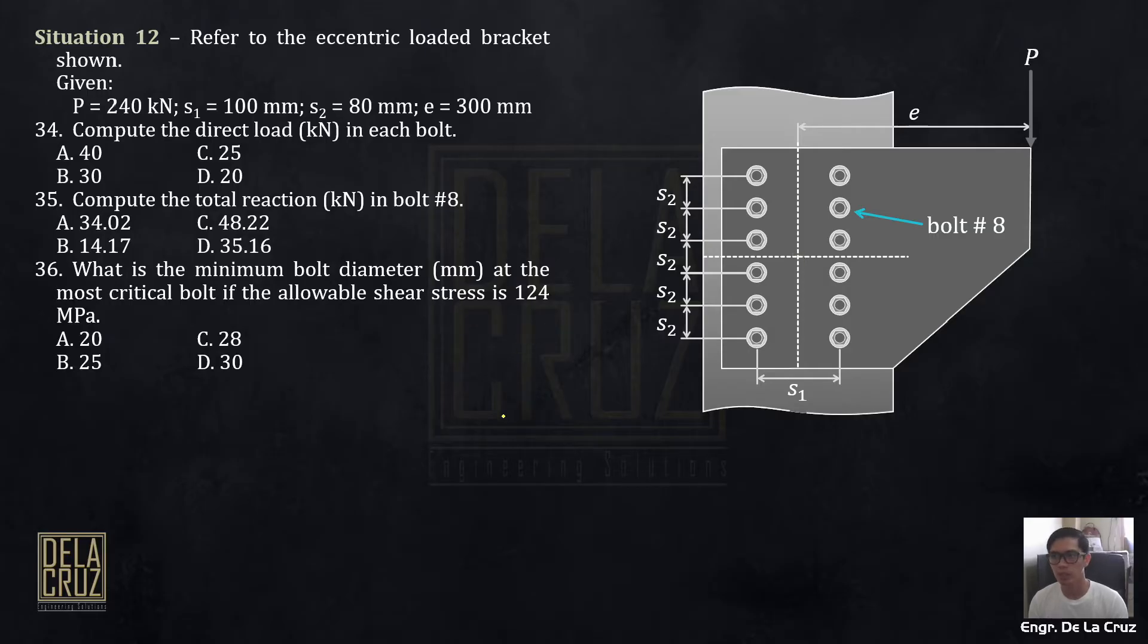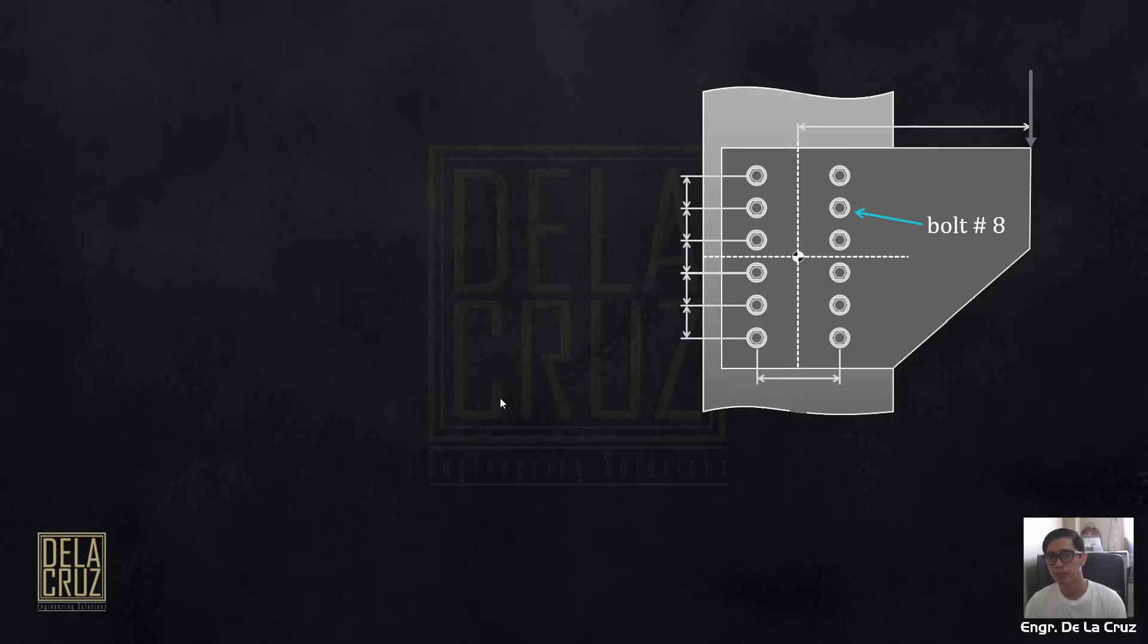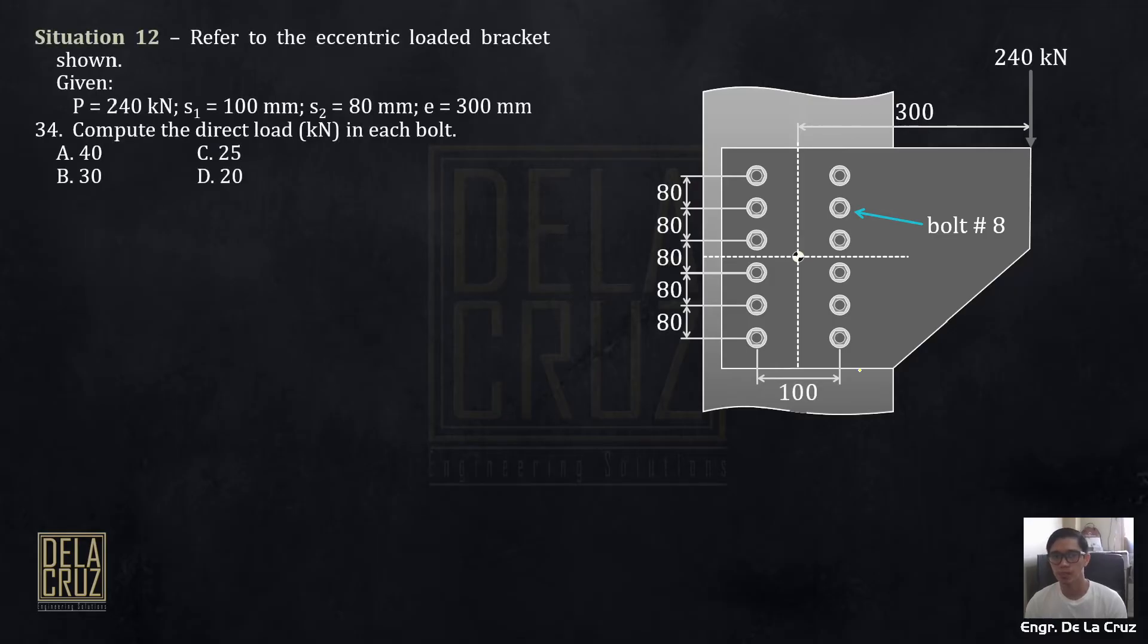Alright, so the analysis here is elastic analysis. There are two possible solutions but we're using elastic analysis. So, this is our centroid of the bolt section. This is the elastic analysis. Alright, let me just put the values.